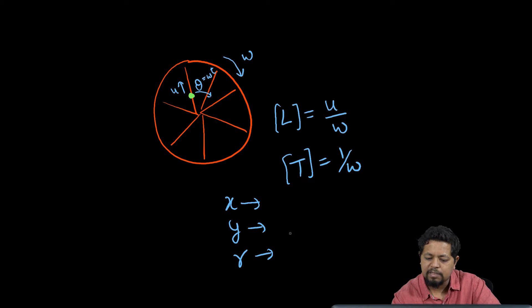We can simply go ahead and replace x by u by omega x, u by omega y, and u by omega r.